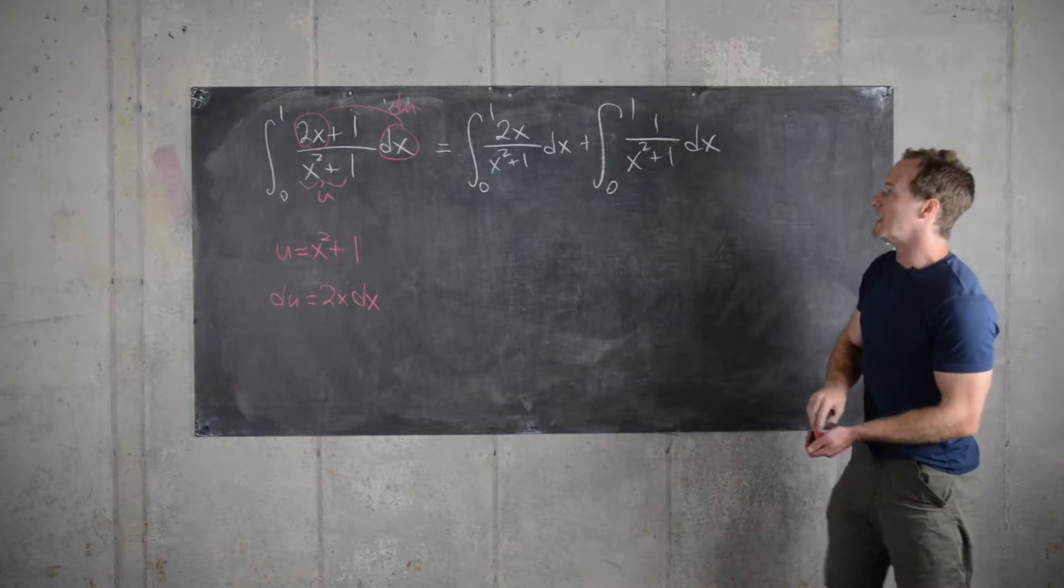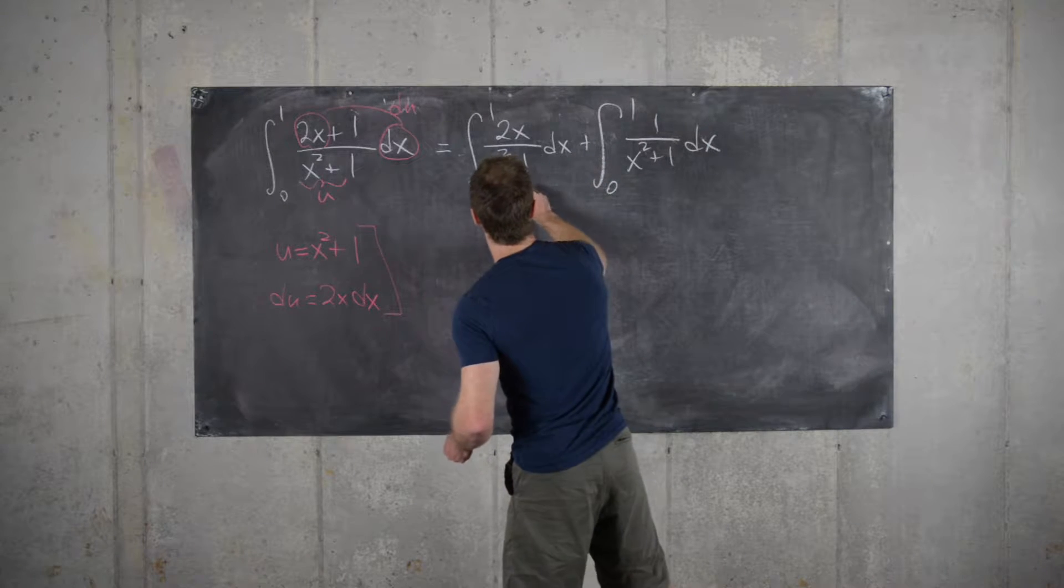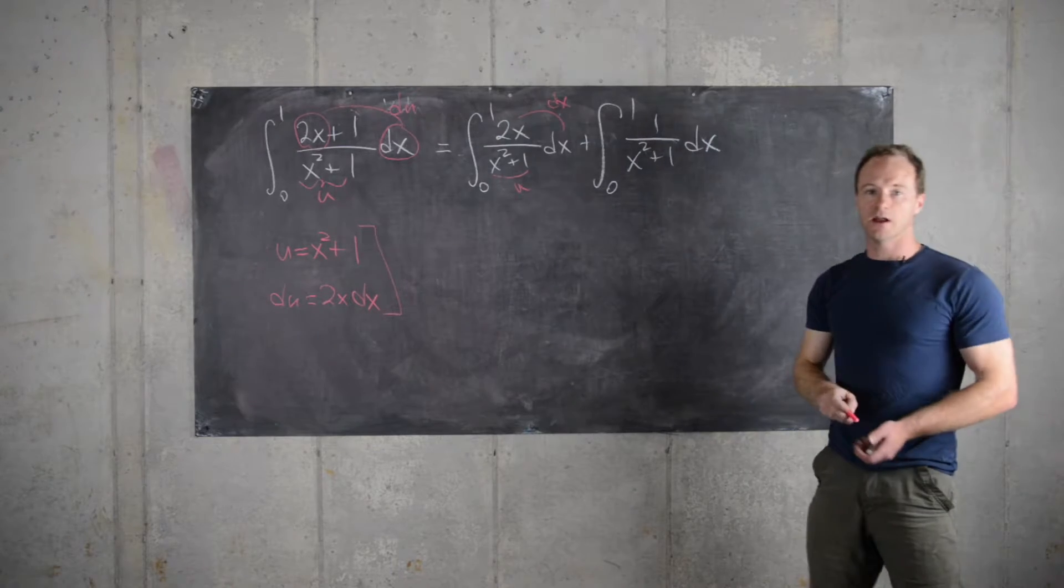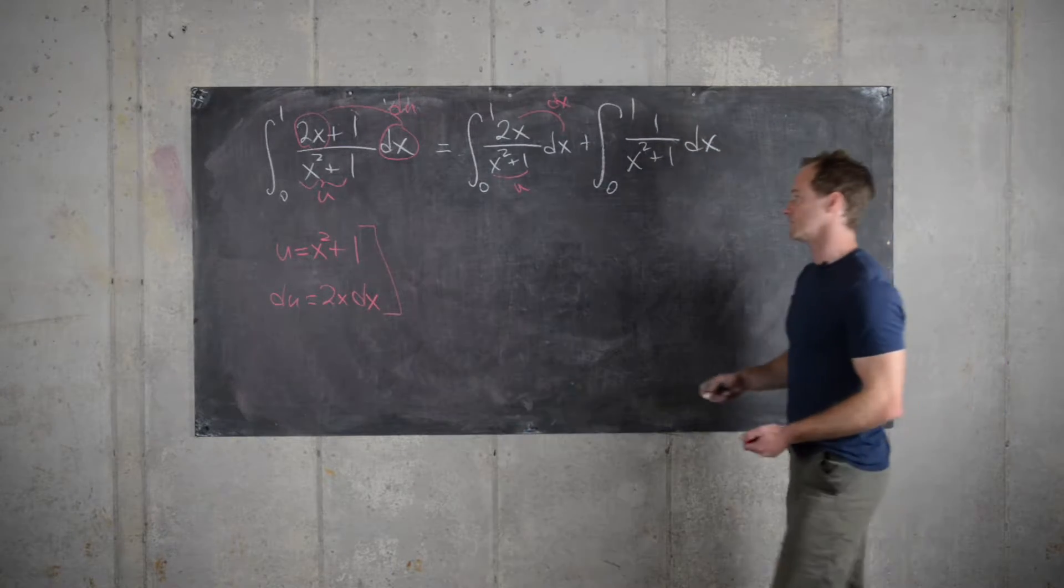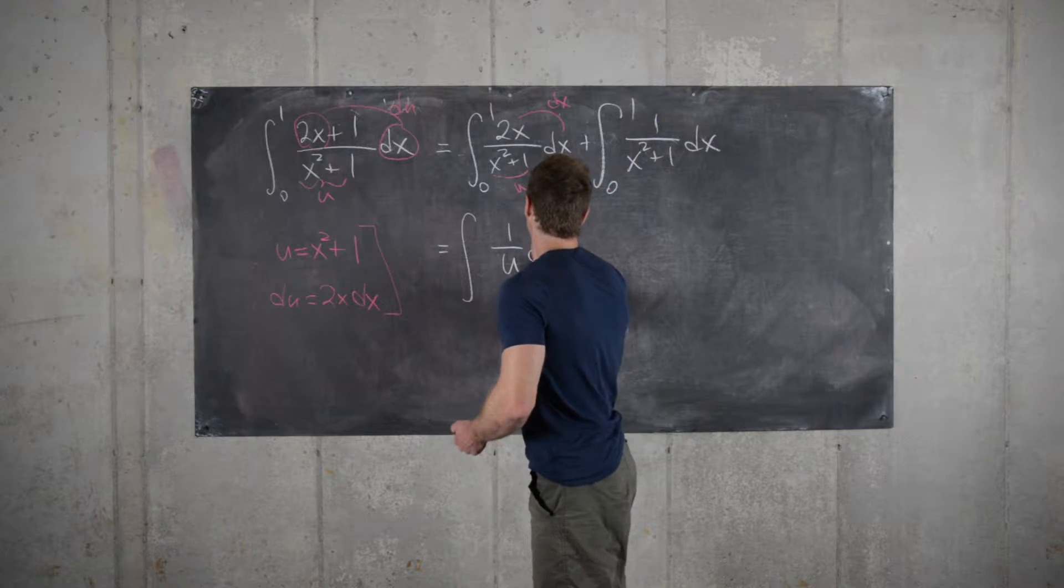Great, and now using this original substitution, we notice that we can write this in a much more simple way using that substitution. So that gives us the integral of 1 over u du.